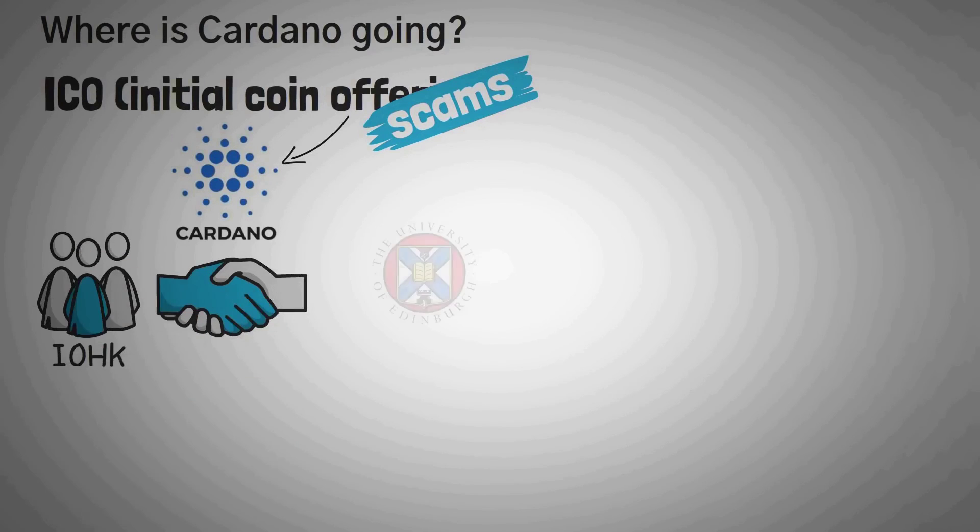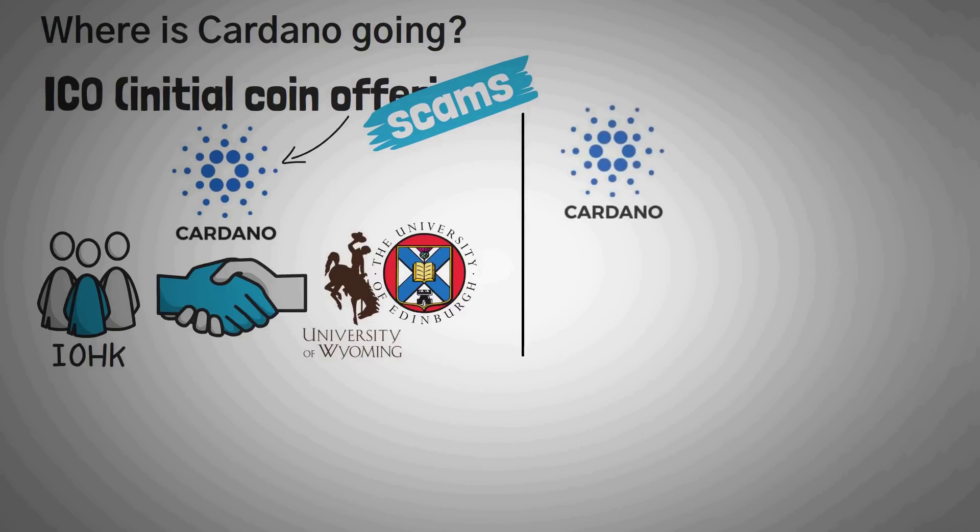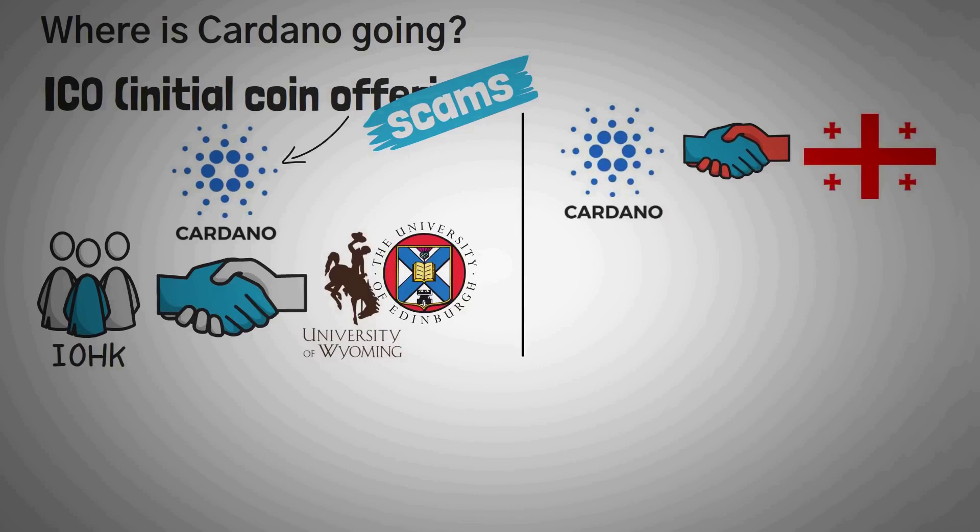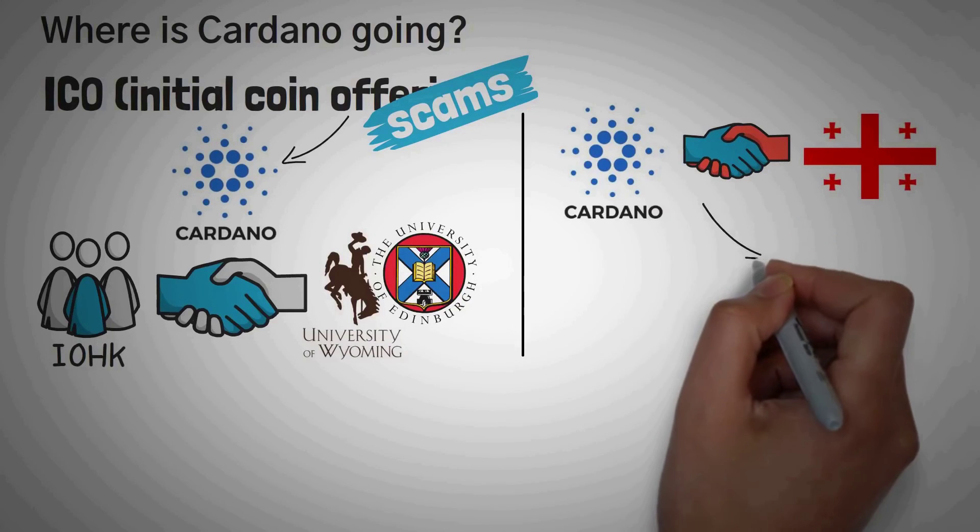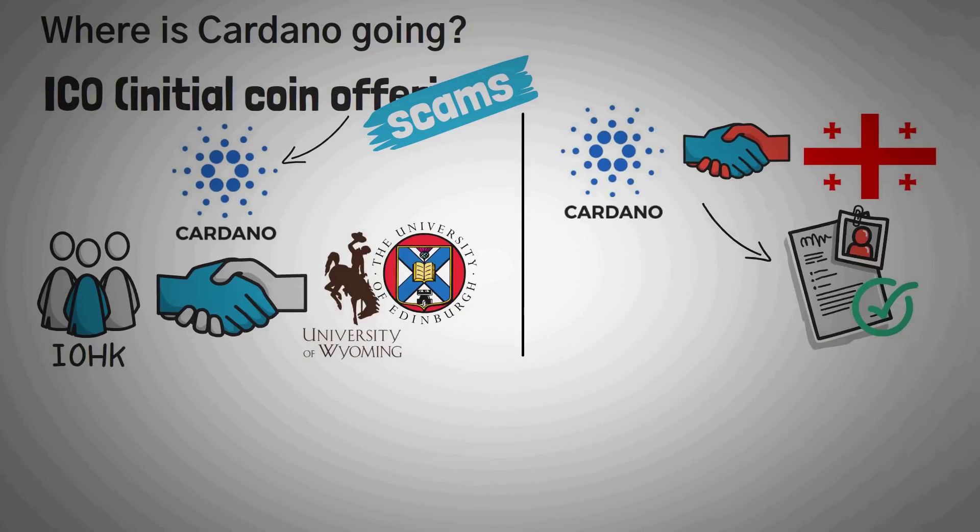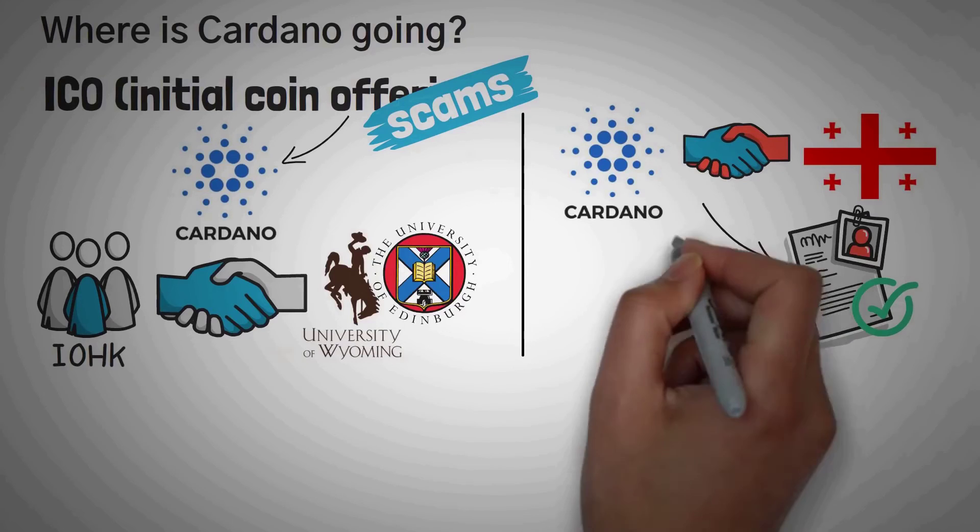IOHK helped both the University of Edinburgh and the University of Wyoming support their blockchain initiatives, and from there has launched into several real world partnerships. We can see the breadth and depth of Cardano's potential when we look to its partnership with the government of Georgia, the country, not the state, and they have decided to build an ID verification system using both Cardano and IOHK's enterprise solution, Atala.